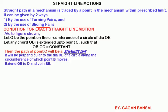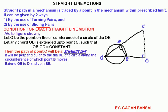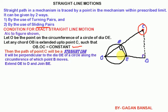There are two types of mechanisms that may provide exact or approximate straight line motion. For the condition for exact straight line motion, consider a figure in which O is a point on the circumference of a circle of diameter OD. Let any chord OB be extended up to point C such that OB × OC is constant. Then point C will trace a straight line path perpendicular to the diameter OE extended at point D, meaning CD is perpendicular to OD.